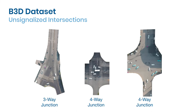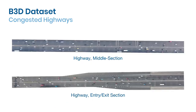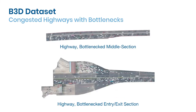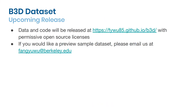The B3D dataset contains a variety of unstructured road environments such as unsignalized intersections, unsignalized roundabouts, congested highways, and congested highways with bottlenecks. We are planning to release our work this summer along with the dataset. If you are interested in getting a preview of our dataset or have any questions, feel free to email me. Thank you.